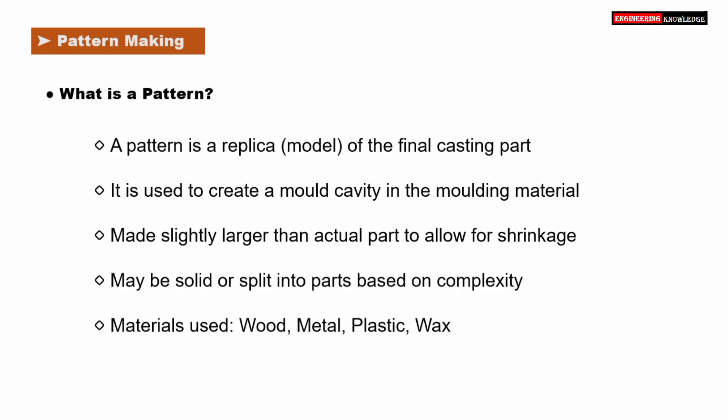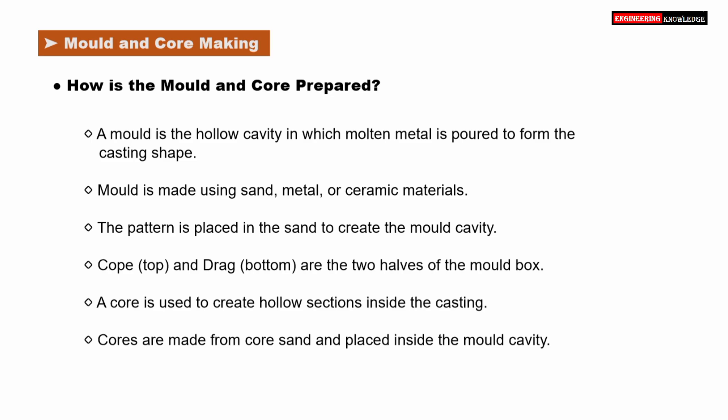Patterns are commonly made using wood, metal, plastic, or wax. A mold is a hollow cavity where molten metal is poured to form the casting shape. Molds are made using sand, metal, or ceramic materials. The pattern is placed in the sand to create this mold cavity. The mold box has two parts: the cope at the top and the drag at the bottom. A core is used to create hollow sections inside the casting. Cores are usually made of core sand and are placed inside the mold cavity.